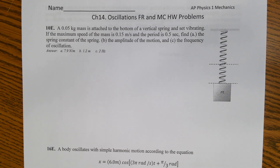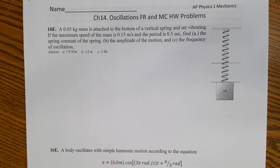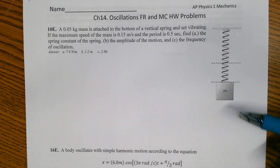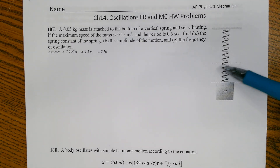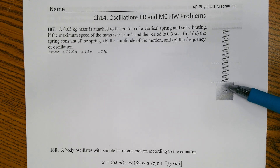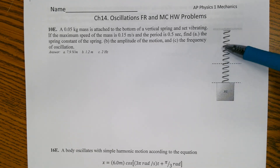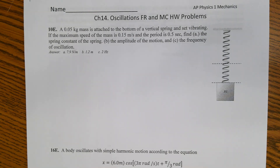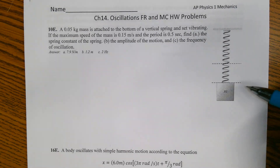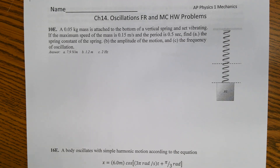Vertical springs are slightly different than horizontal spring-block problems because of gravity. With a vertical spring, you have an equilibrium where the spring is not compressed or stretched without the block. But when you put the block on it, it stretches to a different equilibrium position, and then it oscillates back and forth. Vertical springs are a little tricky because gravity is involved.